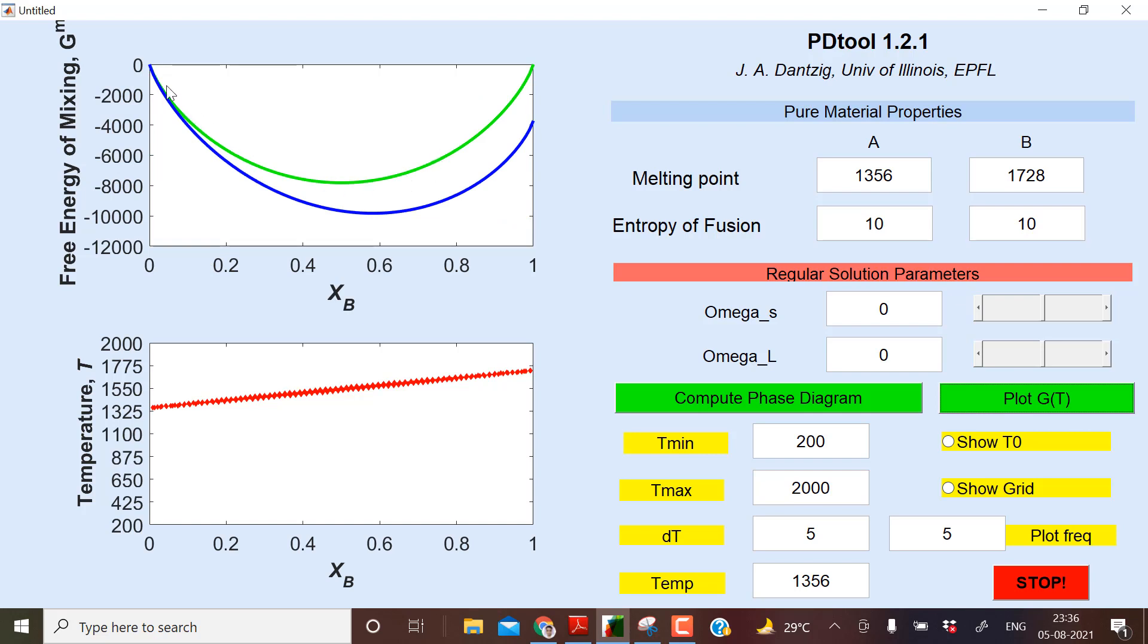Now you see the free energy diagram of liquid is here and free energy diagram of solid - they should meet at a point. So it is meeting at a point. This is the type. You can reverse also, you can do this for nickel, 1728.